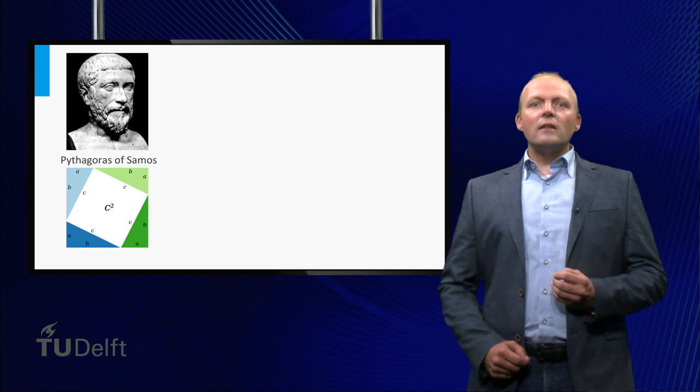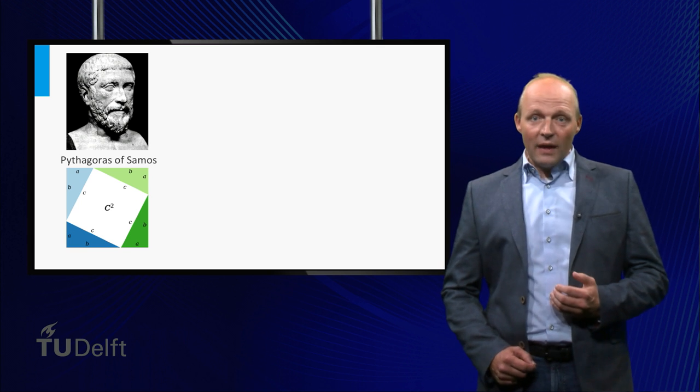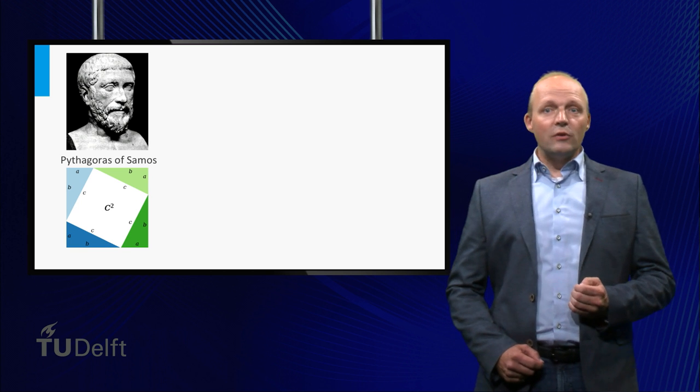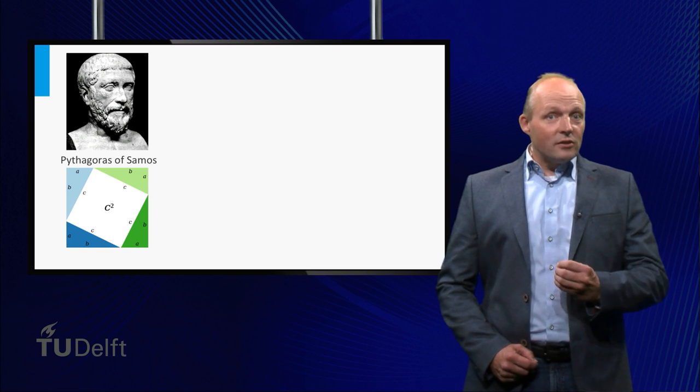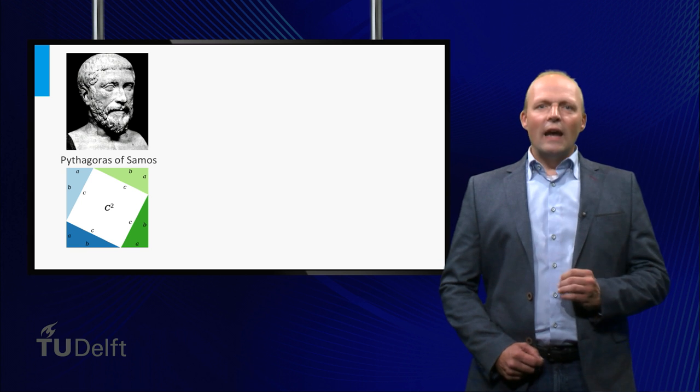The length of a vector can be computed using the Pythagorean theorem. This theorem is named after Pythagoras of Samos. This mathematician and philosopher lived about 500 years before Christ, and it might be nice to just gather some information on this person. Let's not do that here, and focus on his theorem.